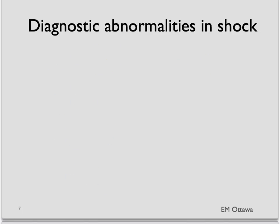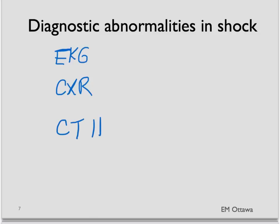What about other diagnostic abnormalities? Based on heart dysfunction, you may expect ischemia on ECG, and arrhythmias may be visible as well. On a chest X-ray, you will be able to see ARDS and pulmonary edema. In a patient with stroke-like symptoms, a CT of the head might show abnormalities.